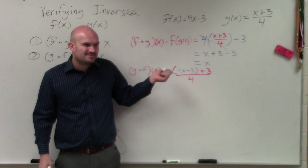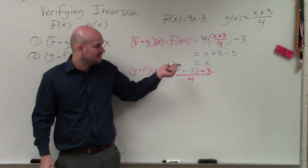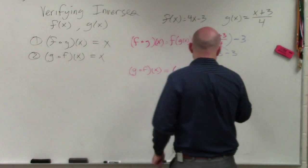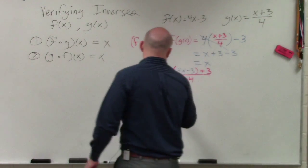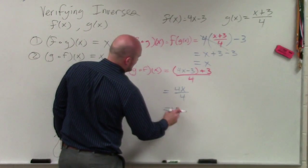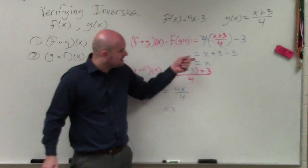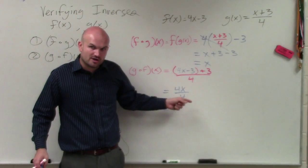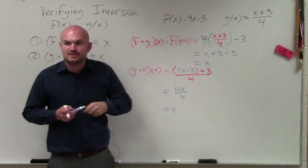Well now, I don't really need these parentheses, do I? No. I can just get rid of that. I can do negative 3 plus 3, which is going to leave me with 4x over 4, which leaves me with an x. So since the composition in both ways works, I can verify that these are inverses of each other.